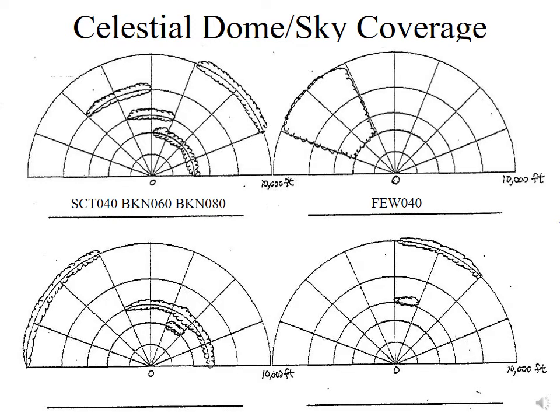In the bottom-left example, the first cloud deck at 4,000 feet has one-eighth coverage — that's few, so FEW 040. The next cloud deck at 6,000 feet adds four more quadrants, giving cumulatively five-eighths coverage of the sky, which falls into the broken category: BKN 060. Then another cloud deck at 10,000 feet completes all eight quadrants, giving overcast coverage: OVC 100. So the full description is FEW 040, BKN 060, OVC 100.